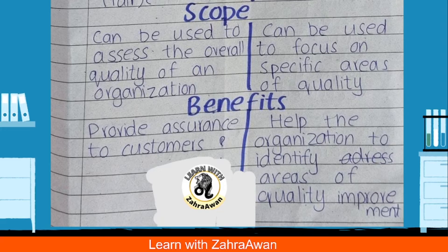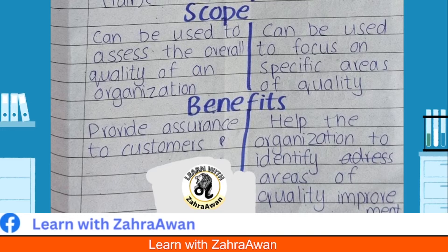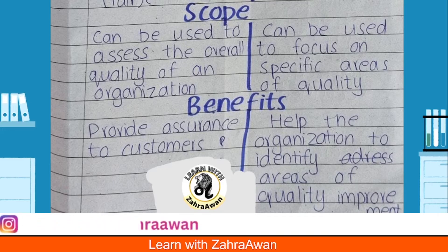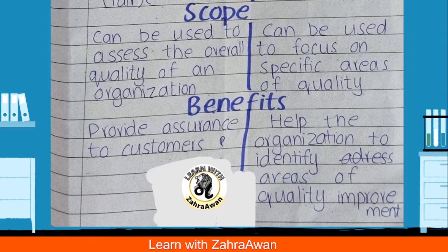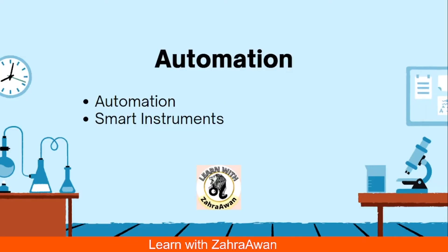I hope this will be helpful. Share this video with friends — it's very important for your exam. I hope my video will be helpful. Now question number 2: automation in chemical industries — what types of automation are used? I have already made a video on automation introduction that you can see.